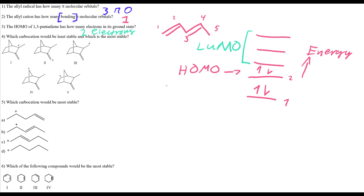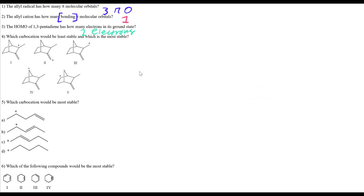Since the LUMO is unoccupied, it has zero electrons. With only two double bonds (each with two electrons), we have two electrons in the HOMO.